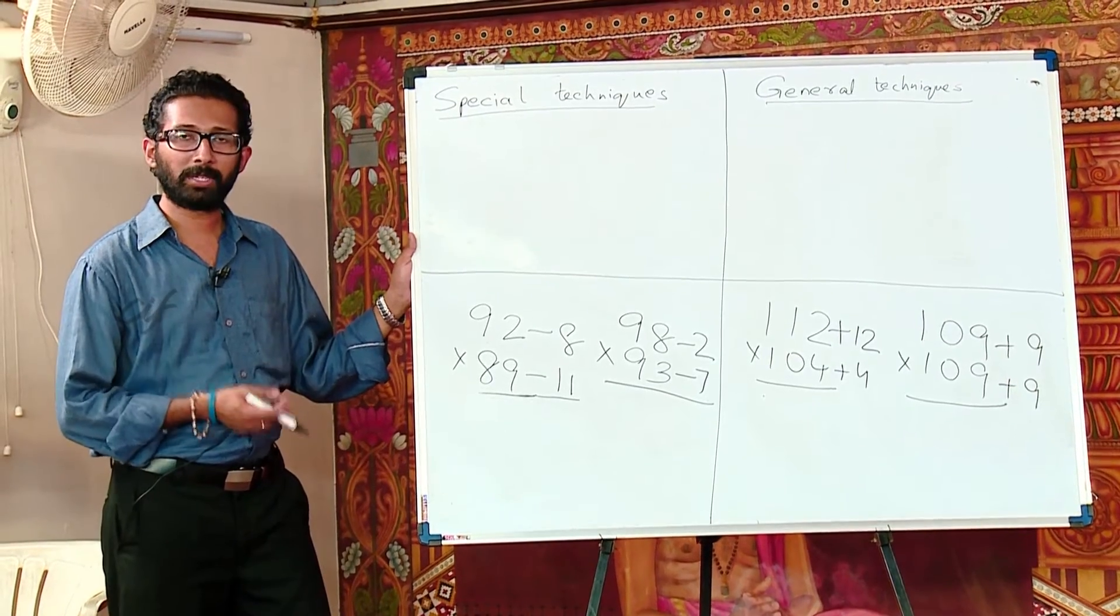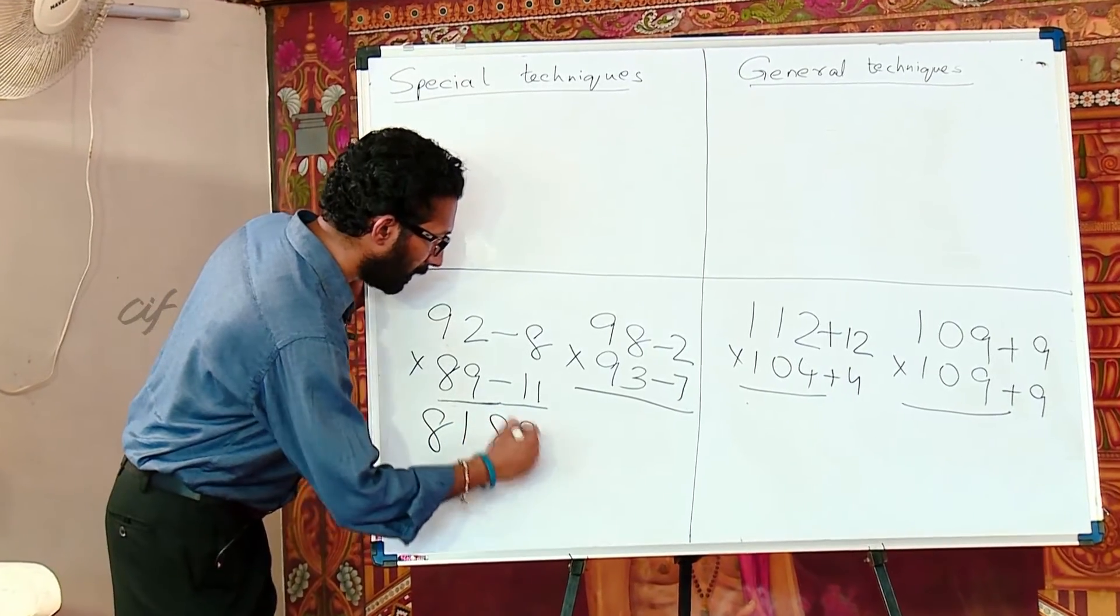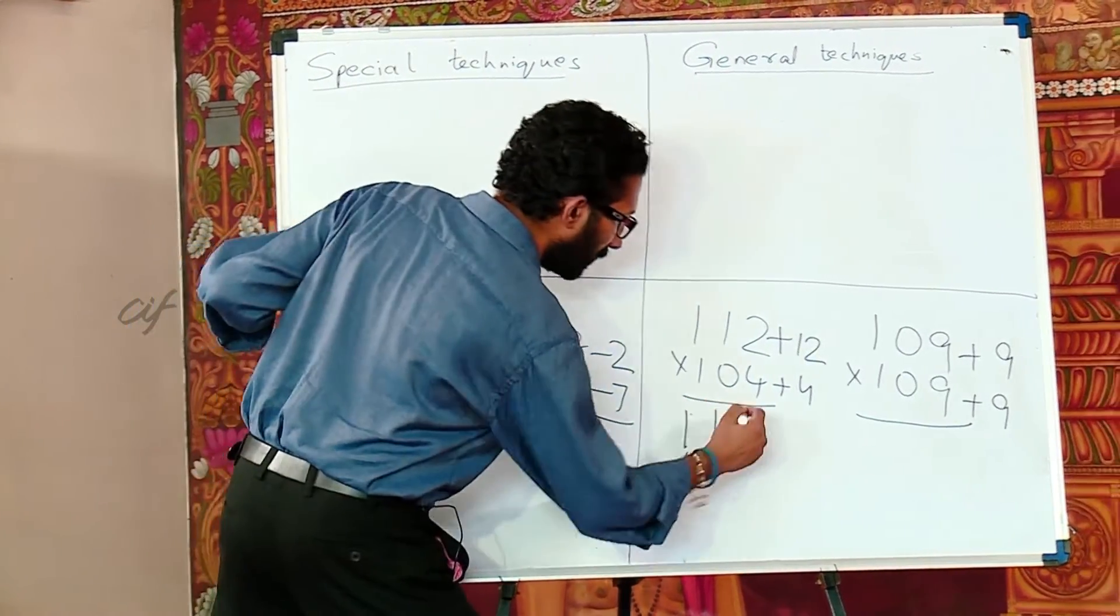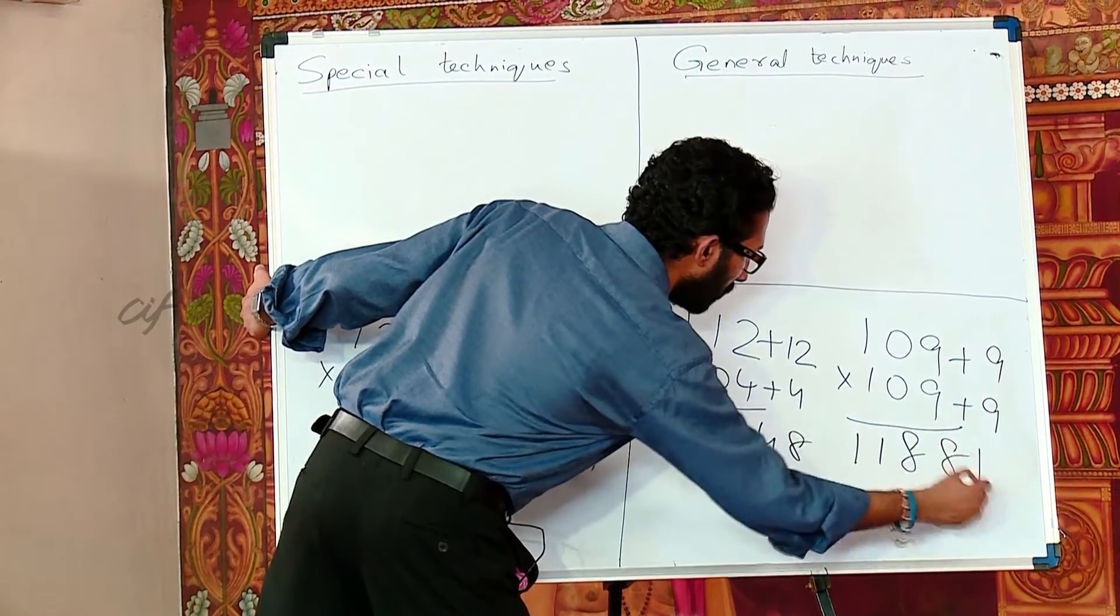So now I am going to use another technique in Vedic mathematics using which anybody can get the answer for all the 4 questions in 5 to 10 seconds. This would be 8, 1, 8, 8, 9, 1, 1, 4, 1, 1, 6, 4, 8, 1, 1, 8, 8, 1.